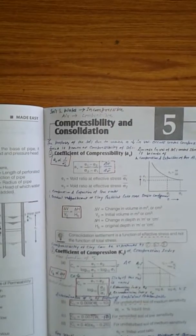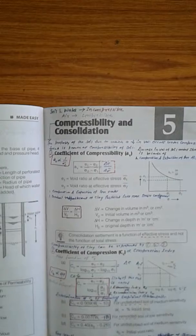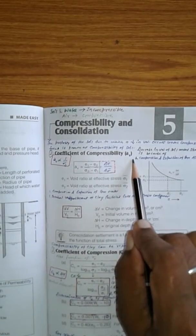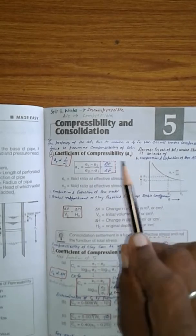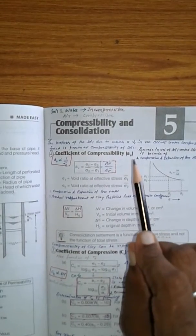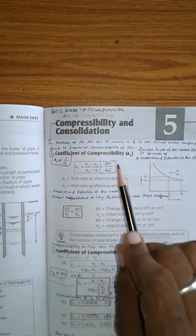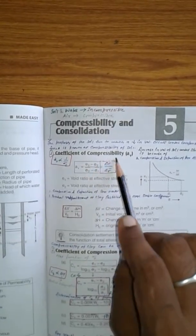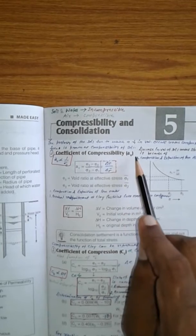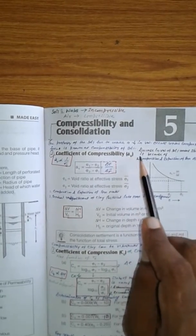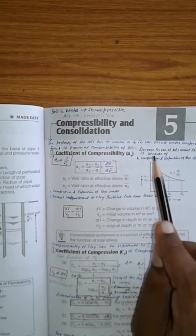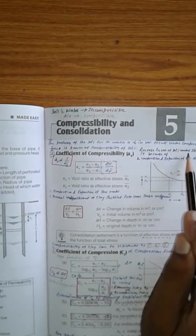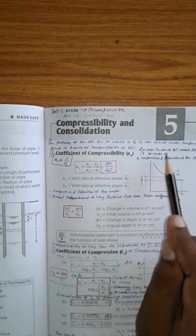Hello friends, welcome all of you to channel SN Academy. Today I am discussing coefficient of compressibility. This is indicated by Av in chapter consolidation and compressibility of soil mechanics. It is a constant parameter. First thing is that in compressibility or in consolidation, decrease in volume of soil under stresses is because of compression and expulsion of pore air.